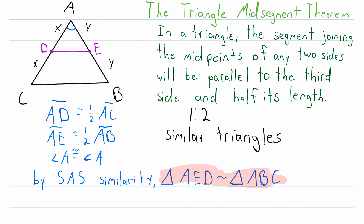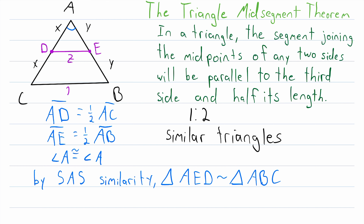Why is this so important? Because corresponding sides of similar triangles are proportional. Since these two triangles are similar and we know that AD is half the length of the corresponding side AC, we also know that DE is half the length of its corresponding side CB. We'll say DE has a length of Z, therefore CB has a length of 2Z. So now we're basically halfway done — we've proven that the segment joining the midpoints of two sides of a triangle is half the length of the third side. Now we just need to prove that DE is parallel to the third side CB.